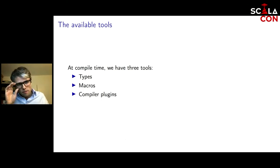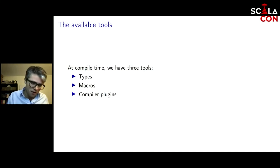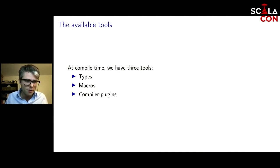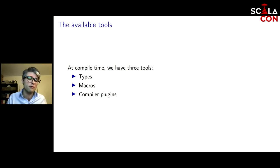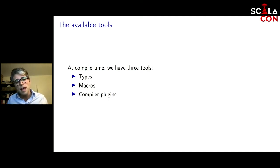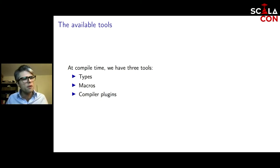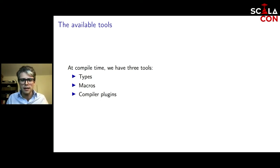We have to do something at compile time, not at runtime. In the Scala world we basically have three tools: types, with which we can do some calculations; macros, which are functions that run at compile time and generate new Scala code; and compiler plugins, which are the most powerful but also the most difficult — we can plug in a new phase into the compiler and analyze or transform the code in any way we want.